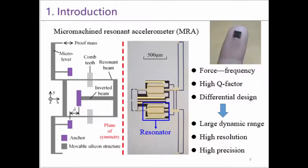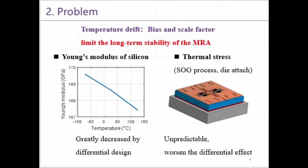Micromachined resonant accelerometers, or MRA for short, is based on the frequency force-to-frequency characteristics of high Q resonators. It's very attractive due to its large dynamic range and high precision. The structure is symmetrical. The difference of the two resonator frequency represents the input acceleration. However, the frequency of the resonant beam is not only affected by the acceleration but also affected by the temperature. The temperature drift of the bias and scale factor limit the long-term stability of the MRA.